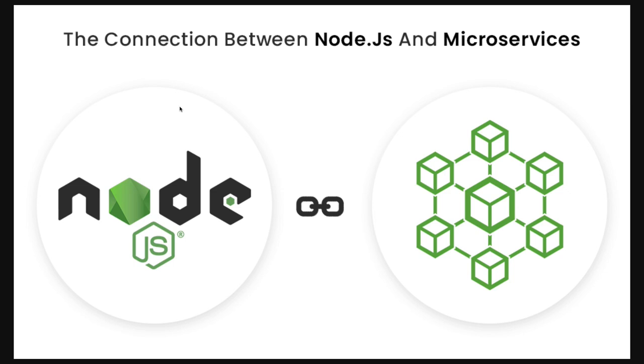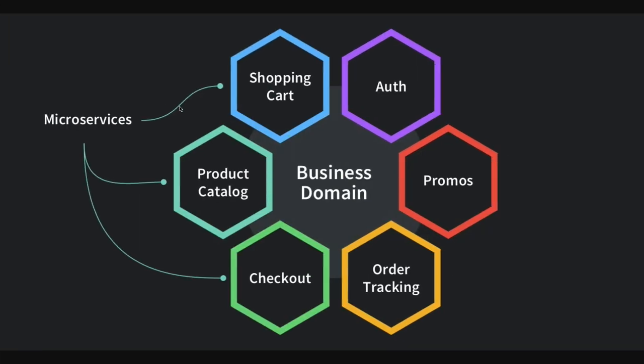Creating Node.js microservices is fairly easy. You can create different microservices around business domains: auth, order tracking, checkout, product catalog, shopping cart, and so on. For example, a promo code service in a shopping cart application can work independently — it accesses user data and email IDs and sends promo codes. Authentication can be a separate independent microservice using OAuth or native token-based login. All these microservices can independently exist and talk to each other.